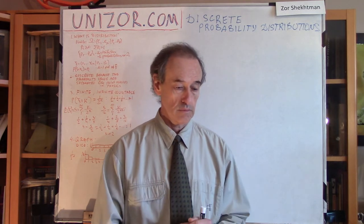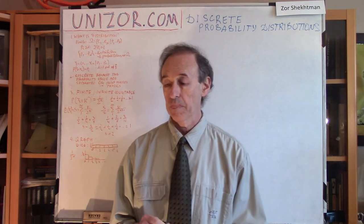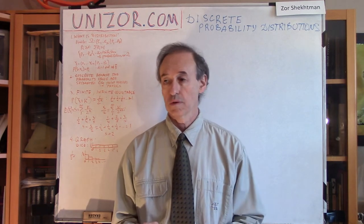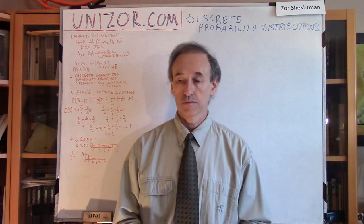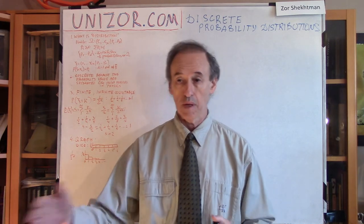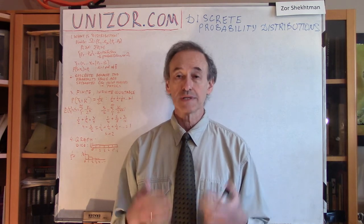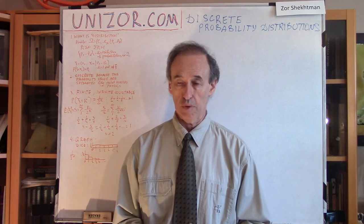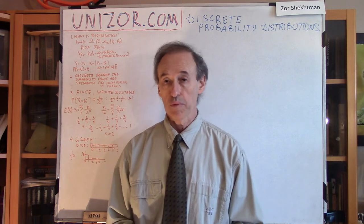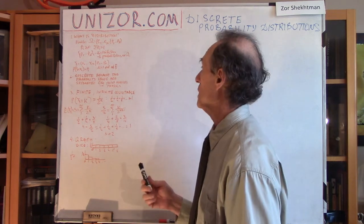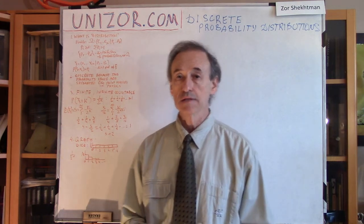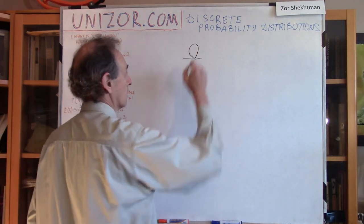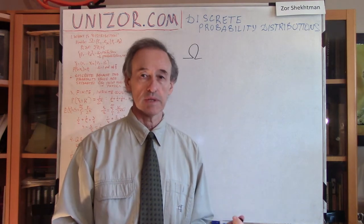So, back to discrete probability distributions. First of all, what do we mean when we are talking about distribution? Well, we can distribute money, we can distribute weight among certain things. Probability is a measure which is very much like money, like weight, like length, or whatever else. So we can distribute the probability, and in the basic finite case, what we usually have is a sample space which basically models our random experiment.